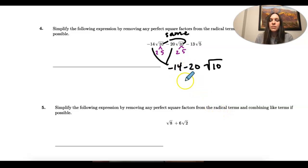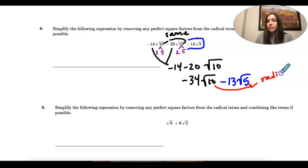So 14 minus 20 is negative 34 square root of 10. And then I still have this negative 13 square root of 5. But when I get here, my radicands 10 and 5 are different.